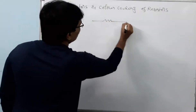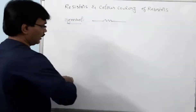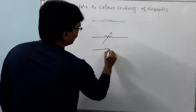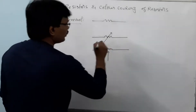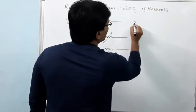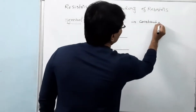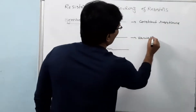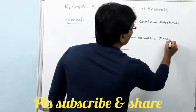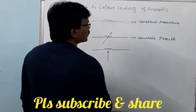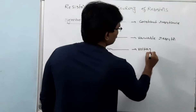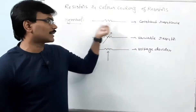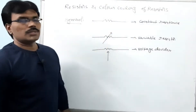A resistor is symbolically denoted by different symbols. The first symbol represents a fixed resistor — one that offers constant resistance, for example 10 ohms. The second symbol is a variable resistor, meaning we can vary it over a range of resistance values — for example, rheostats. The third symbol is called a voltage divider. Wherever we see these kinds of symbols, they indicate a resistor in the circuit.